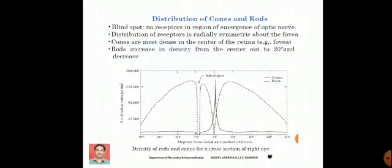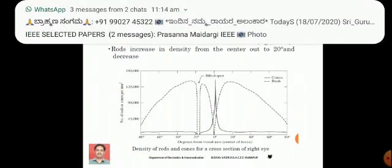Here, in this slide, we have shown the distribution of cones and rods. If you look at the diagram, we have a blind spot. The area where cones and rods are absent is called the blind spot.